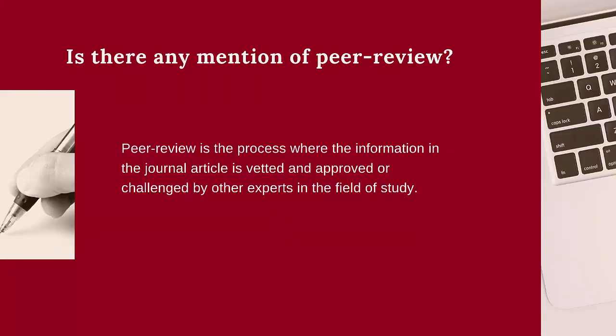The second step is to find any mention of peer review. This is where you will look at the journal itself and not the article. Peer review is the process where the information in the journal article is vetted and approved or challenged by other experts in the field of study. Journal publishers will usually have the journal publish only peer-reviewed articles or not, so this is why it's important to check the journal's information, even if it means using Google to find that information.